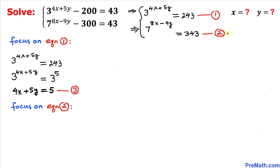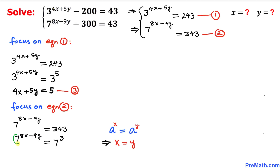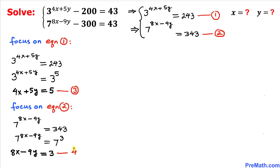Now let's focus on equation 2. Looking at the right-hand side, 343 can be broken down as 7 times 7 times 7, which equals 7 to the power of 3. So the equation becomes 7 to the power of 8x minus 9y equals 7 to the power of 3. Since the bases are the same, we equate exponents: 8x minus 9y equals 3. Let's call this equation 4.